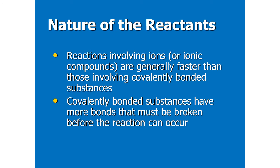So first off, nature of reactants. So this is just going to be that some things will react faster than others will. And there's not really anything that we can do about this in lab. So reactions involving ions or ionic compounds generally occur faster than those involving covalently bonded substances. Covalently bonded substances have more bonds that must be broken down before the reaction can occur. So they would have a larger activation energy, therefore would proceed at a slower rate.